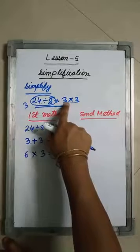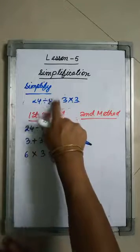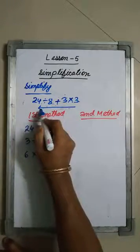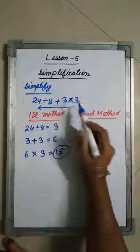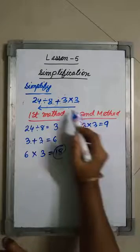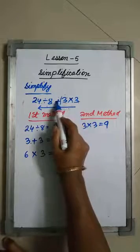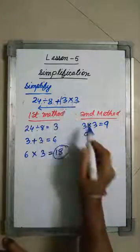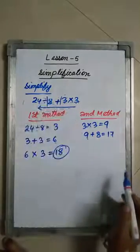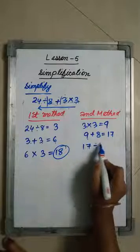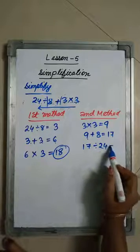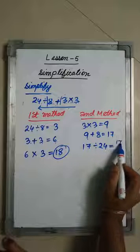In the second method, I am doing the mathematical operation from the back side — that is, from right to left. 3 × 3 = 9. Then 9 + 8 = 17. Then 17 ÷ 24 gives us 17/24. So working from right to left, we get 17/24.